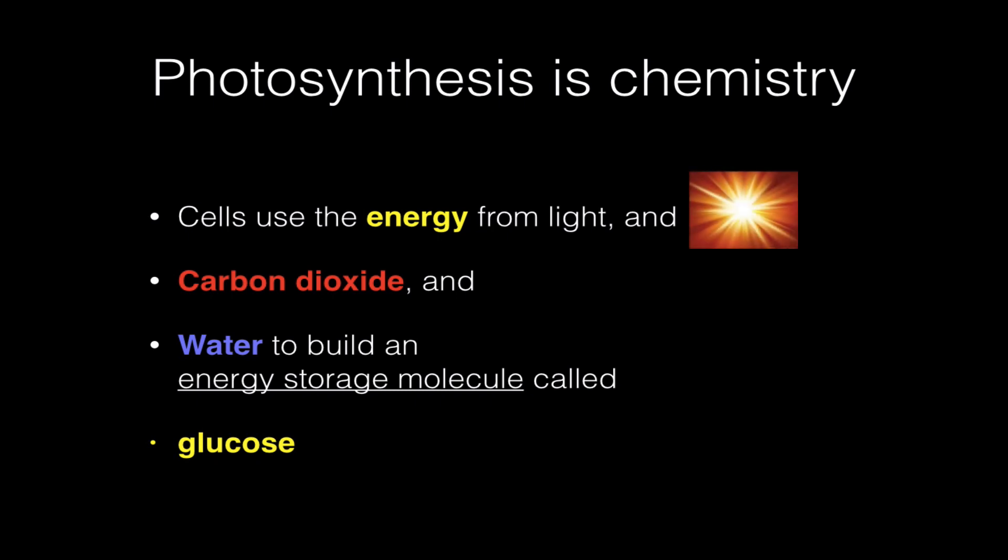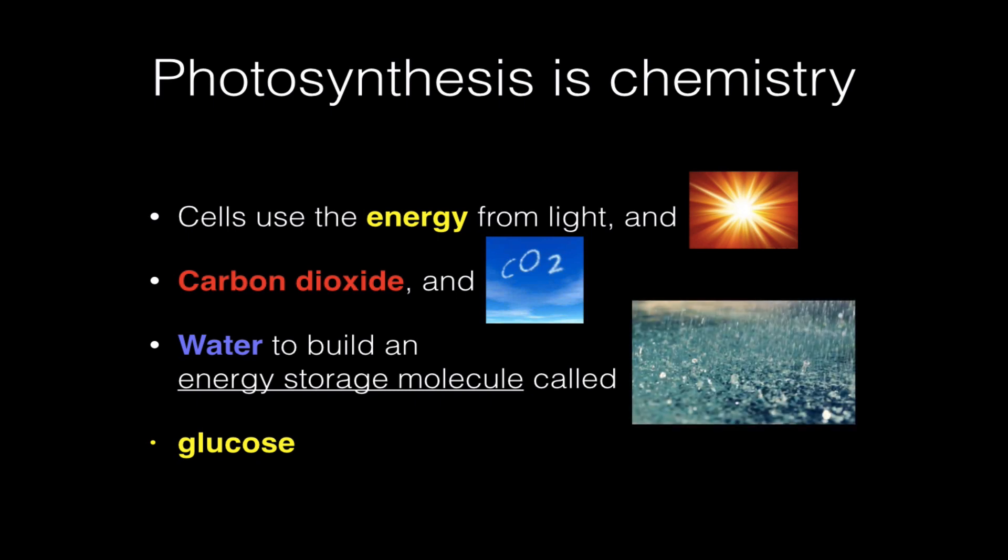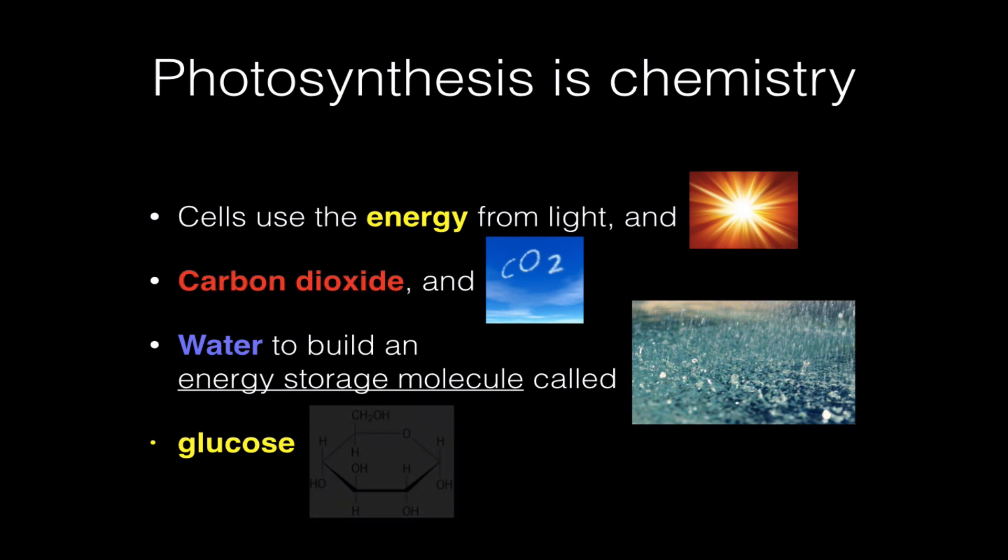So the energy is coming from the sun. Carbon dioxide is coming from the atmosphere usually, or the water if you're a water plant. And of course, water is falling to the ground as rain, or if you're a water plant, you're surrounded by it. These things are being combined in a very special chemical process called photosynthesis to build a large energy storage molecule called glucose. You remember glucose is C6H12O6, and it kind of has this hexagonal shape.